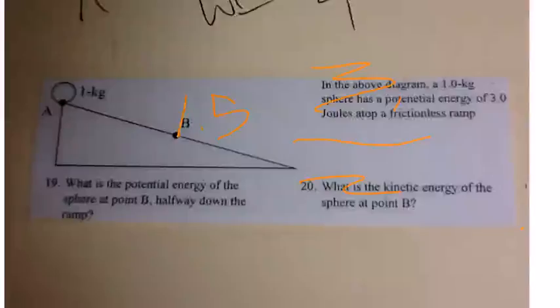In the above diagram, a 1 kg sphere has a potential energy of 3 joules atop a frictionless ramp. What is the potential energy of the sphere at point B, halfway down the ramp? It is 1.5 because you divide 3 by 2, and that's halfway.